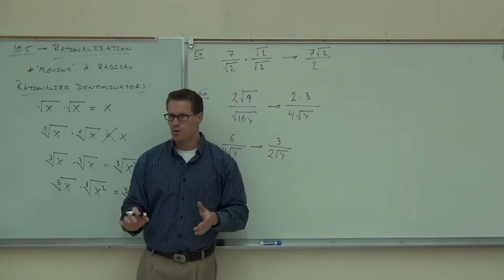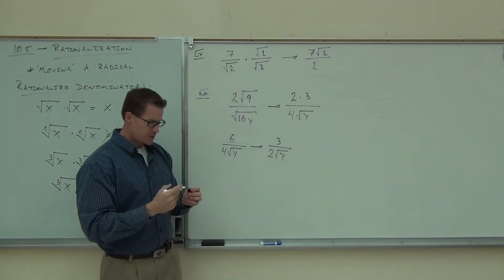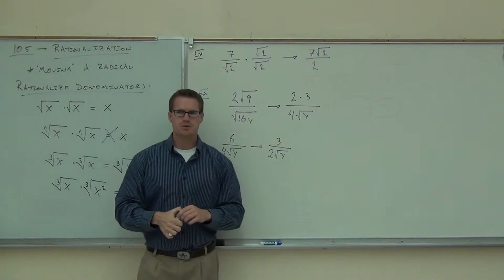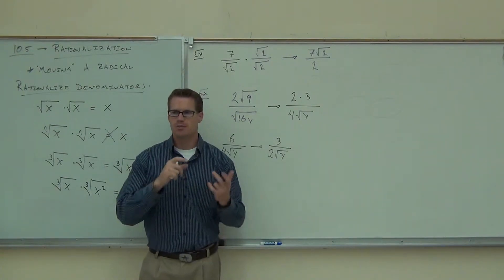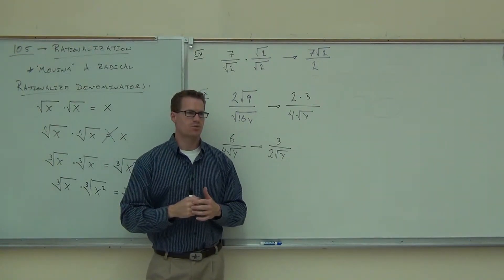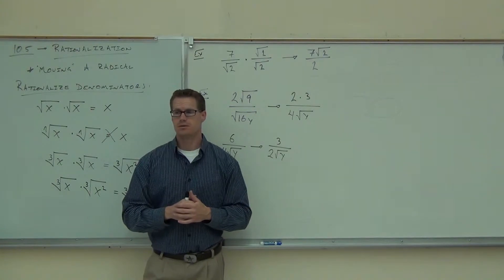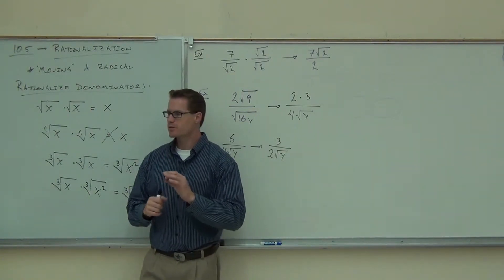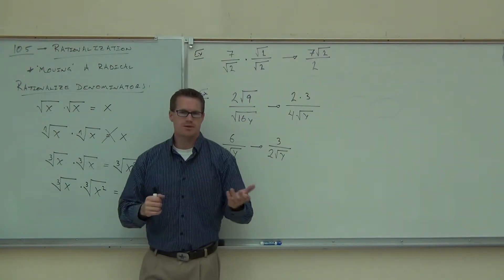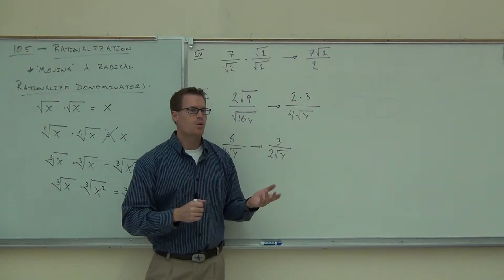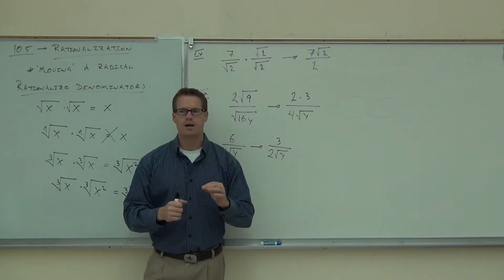It just requires you to simplify more. My question is, what exactly, if I'm supposed to rationalize the denominator, what exactly am I supposed to get rid of here? The root y. Am I trying to get rid of the 2? No. I don't get rid of the 2. The 2 is not in the square root. What I'm trying to get rid of is the square root of y.